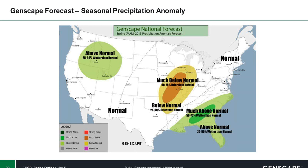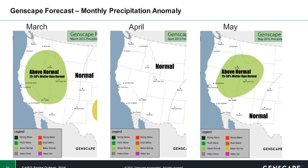Turning our attention to precipitation anomalies, we do see generally normal conditions prevailing throughout the WEC area, with the exception of above-normal conditions basically centered over the state of Idaho. The above-normal criteria falls 25 to 50% wetter than normal conditions. Both March and May have similar precipitation patterns throughout the WEC region, with interior sections standing the best chance to see above-normal precipitation, while April shows mostly normal conditions throughout the entirety of WEC.